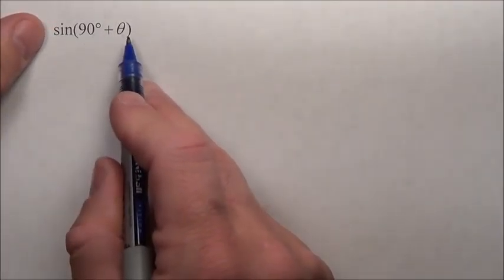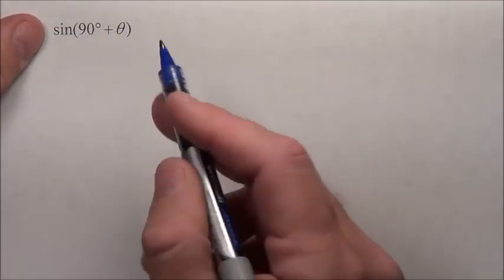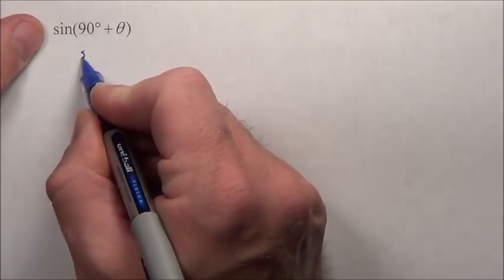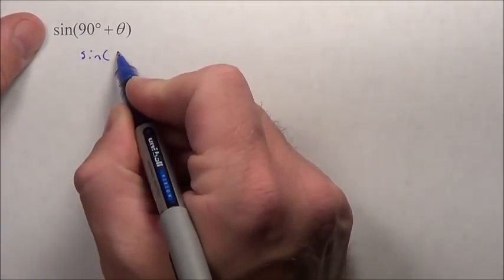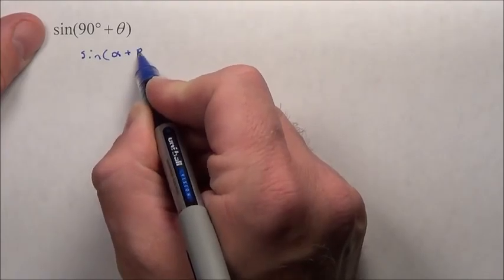It's the sine of two things being added. Well, you can't distribute through. If you remember, the rule says this is going to be the sine, if we have the sine of alpha plus beta,